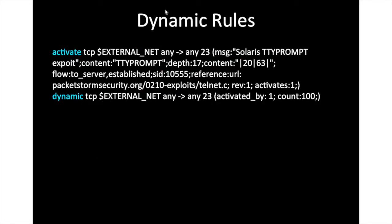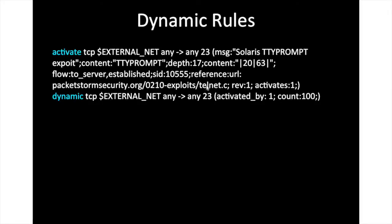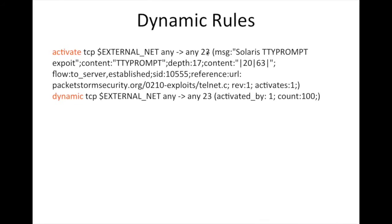Now let's look at dynamic rules. We use the 'activate' keyword and specify a 'dynamic' keyword so that whenever an external activity happens over the Telnet port (ports 20 and 23), a dynamic rule is activated. It will then count and capture the next 100 packets on port 23.